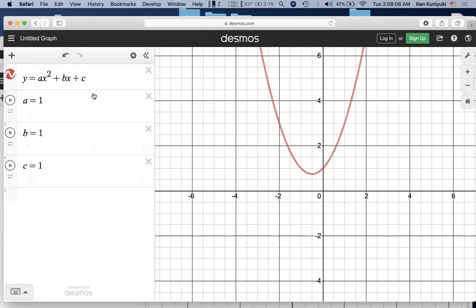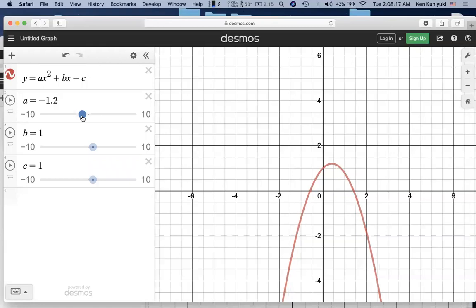And let's put in all three sliders for the parameters a, b, and c. If you vary a, that affects the shape. If a is negative, then it opens downward. If a is zero, then you get a line.